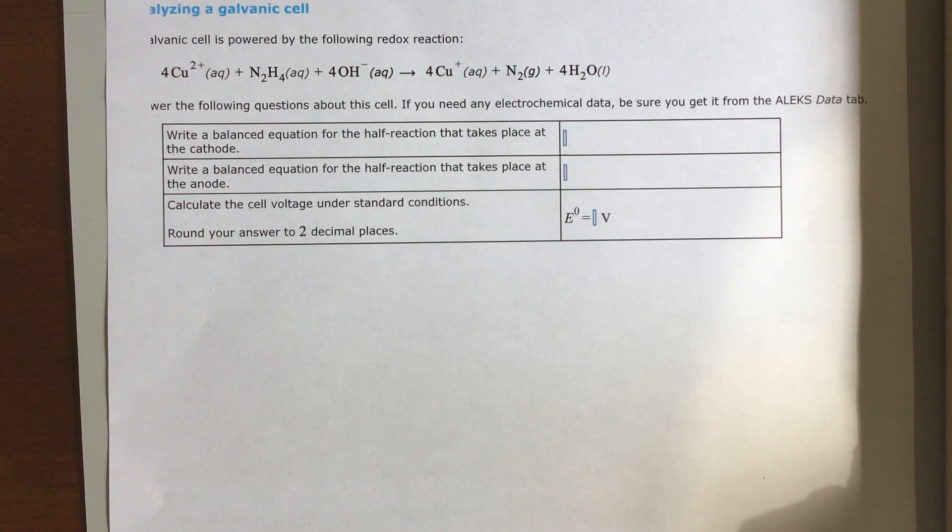Welcome back. This is an ALEX training video on analyzing a galvanic cell. So a galvanic cell, remember, is a battery, and a battery is a redox reaction where an electron is being transferred from one species to another species.